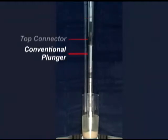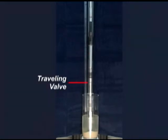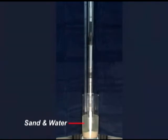We've taken a conventional plunger with the exact same dimensions and put it into the system. Here is a shear pin. Here's the top connector with the 60,000 gap. Below that is the conventional plunger. Below that is the traveling valve. Below that is the simulated wellbore with sand and water.